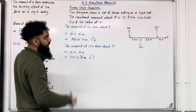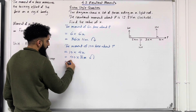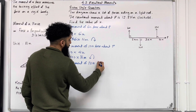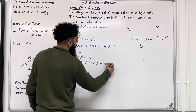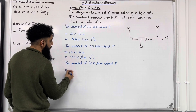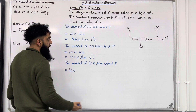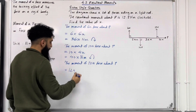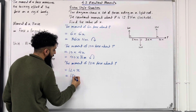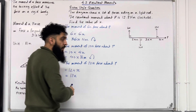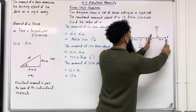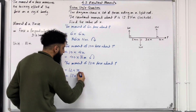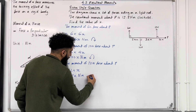Moving on to the final force, the 12 newton force: the moment of the 12 newton force about P equals 12 multiplied by the perpendicular distance from P, which is x. So 12 times x is 12x Newton meters. If I hold on to point P and apply the 12 newton force, it takes the entire body clockwise. So we have 12x Newton meters going clockwise.